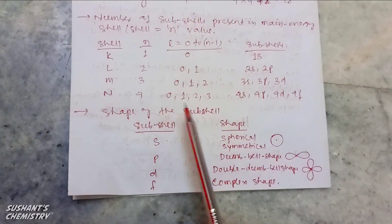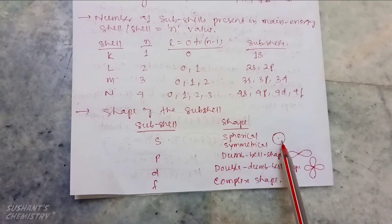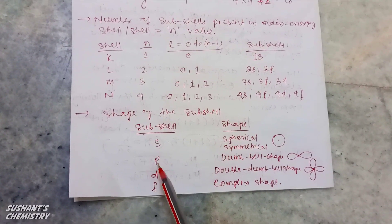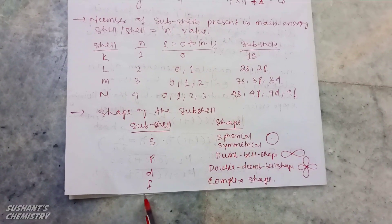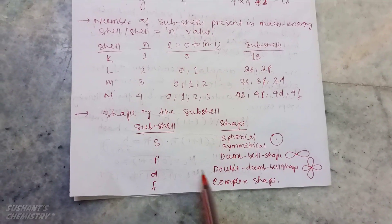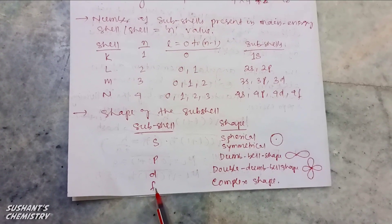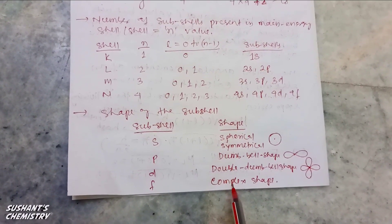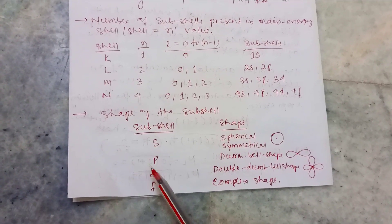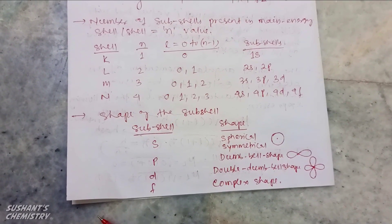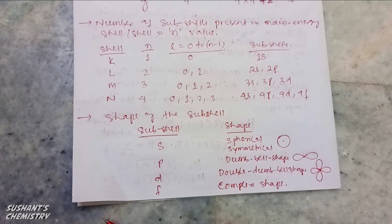This quantum number tells about the shape of the sub-cells. For s sub-cells, the shape is spherical-symmetrical. For p sub-cells, the shape is dumbbell shape. For d sub-cells, the shape is double-dumbbell. For f sub-cells, the shape is called complex or diffuse shape. That is all about the azimuthal quantum number. In the next video, we will discuss the magnetic quantum numbers.